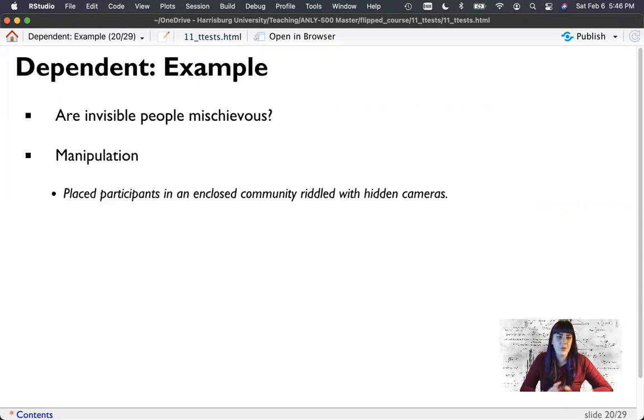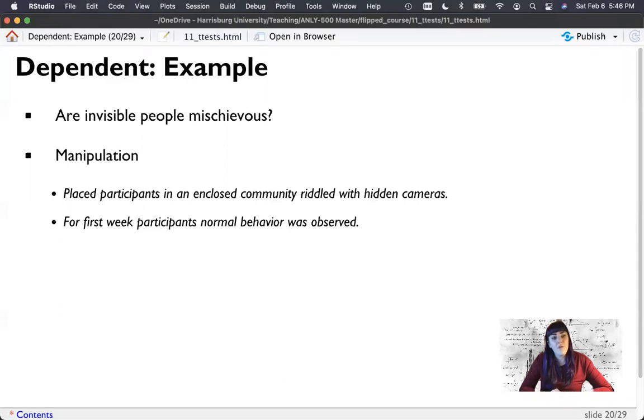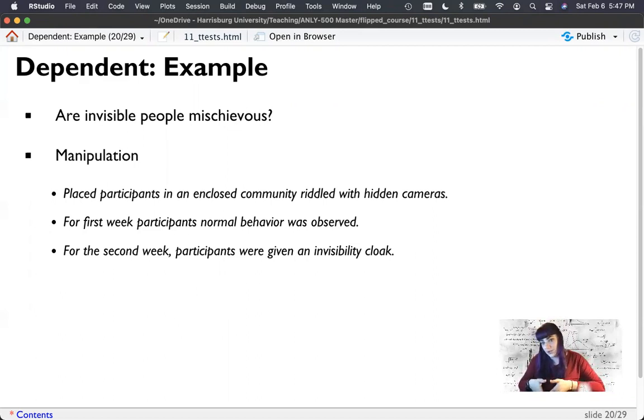But this time, what we'll do is we'll put people in that community with all of our big brother cameras. And for the first week, we'll just see what they do. How crazy are they? And then the second week, we'll give them that invisibility cloak. Let's see what happens. So everyone is getting both conditions, right? They're in the act normal, no cloak, and the cloak condition.